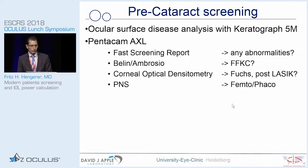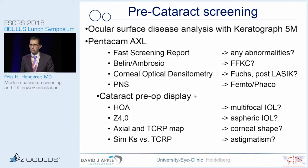Before making measurements with the Pentacam, we use a fast screening report about any abnormalities in general of the anterior and posterior segment of the eye, and the Belin-Ambrosia calculation in order to exclude any type of keratoconic changes. Corneal optical densitometry is used to pick out patients with Fuchs dystrophy, and nucleus staging provides an objective measurement of the density of the nucleus to calculate the approach — whether we are using a femtosecond laser or regular standard phacoemulsification.